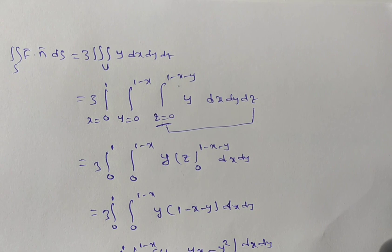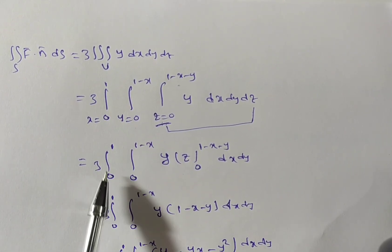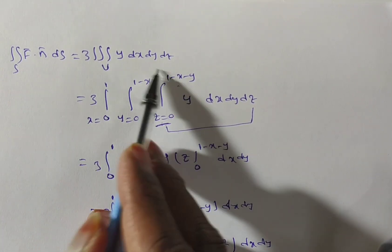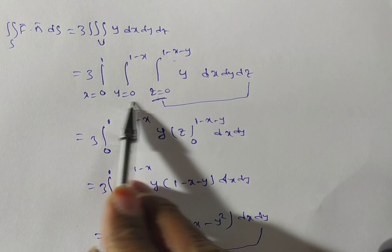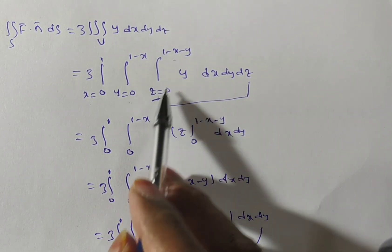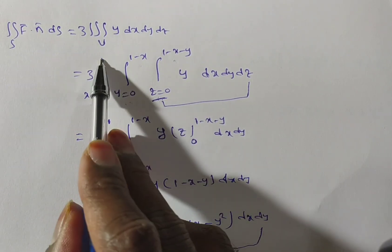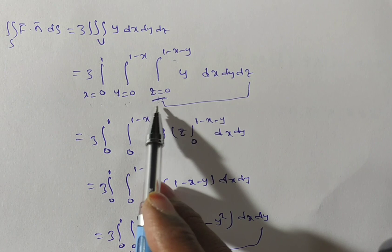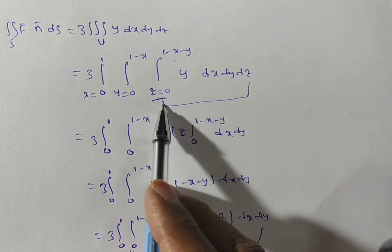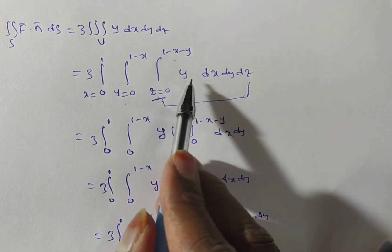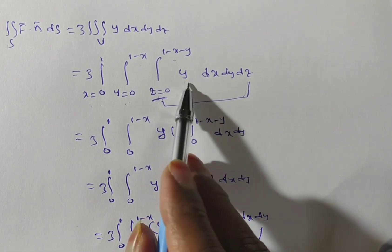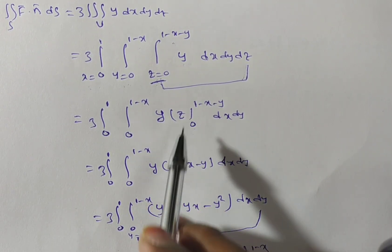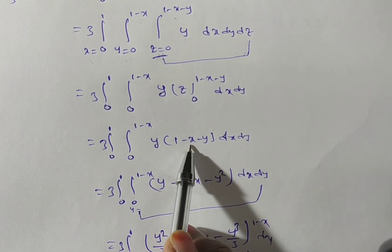Friends, I have solved this problem before but the video was deleted, so I am explaining rather than writing out the full solution. Now, integrating y with respect to z: the integrand is y, which has no z, so it is z⁰ = 1. Integrating 1 with respect to z gives z. Applying limits 0 to 1 − x − y: we get (1 − x − y) − 0 = 1 − x − y. Multiplying by y inside: y(1 − x − y) = y − xy − y².